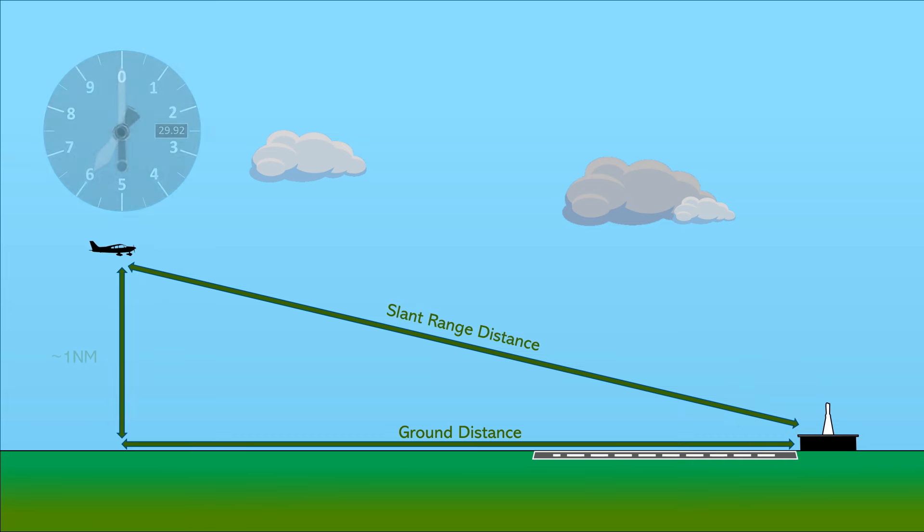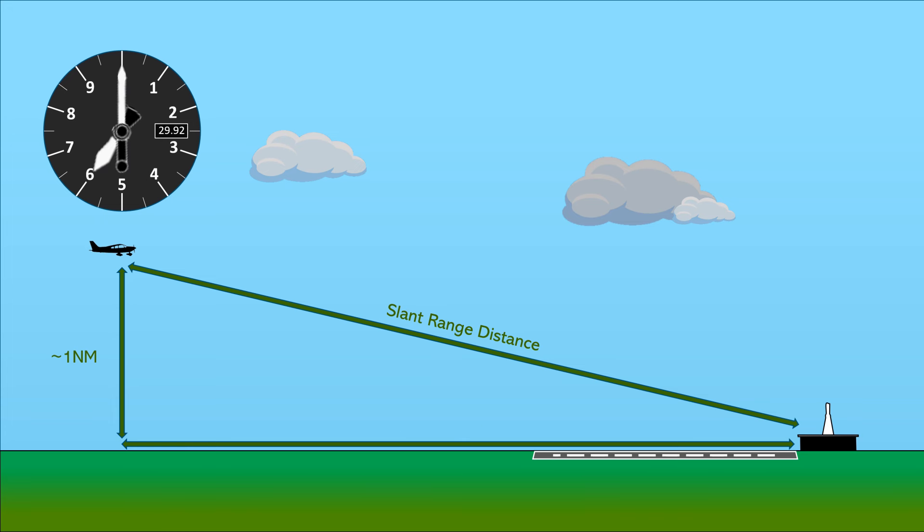If our altitude is 6,000 feet, roughly 1 nautical mile, and our ground distance from the station is 10 nautical miles, our slant range distance will be about 10.04 nautical miles. Anyone remember trigonometry class? Since the DME reports slant range distance, and it's accurate to the nearest tenth of a mile, it'll report 10.0. So as far as we're concerned, the DME is reporting the ground distance to the station exactly.